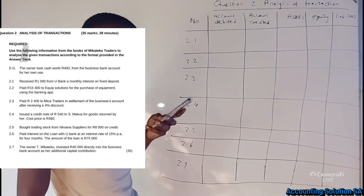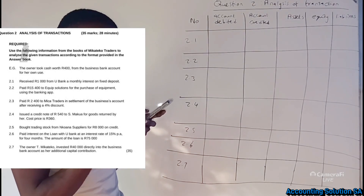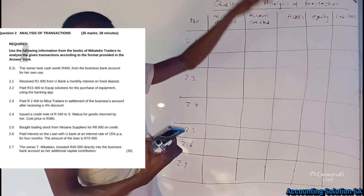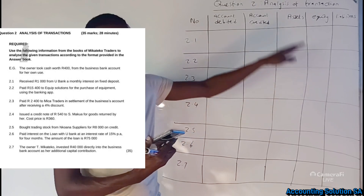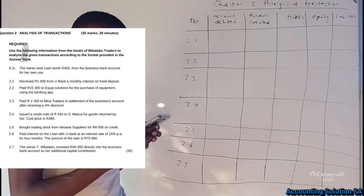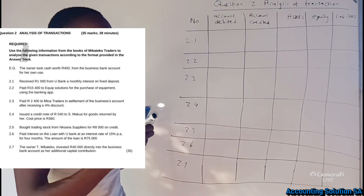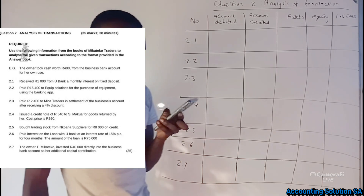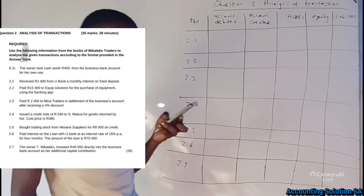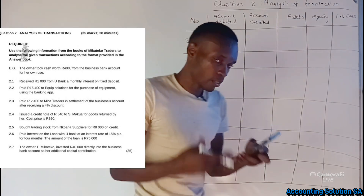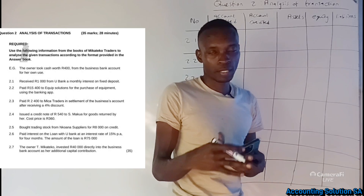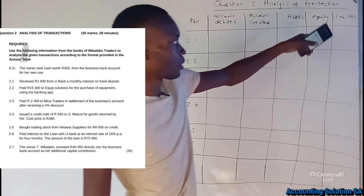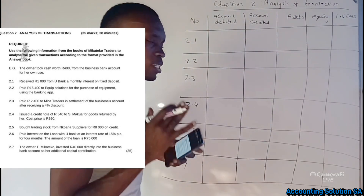The example: the owner took cash of R400 from the business bank account for her own use. When the owner takes something for personal use we call it drawings, and drawings fall under equity.